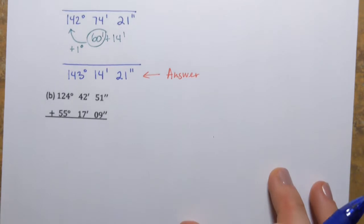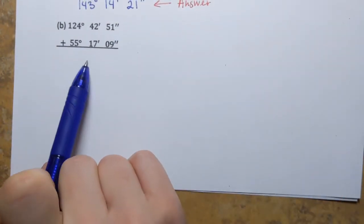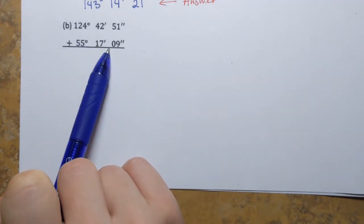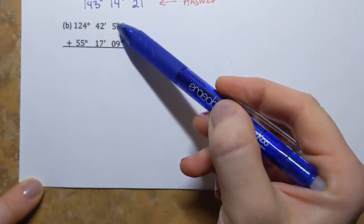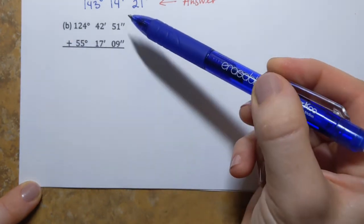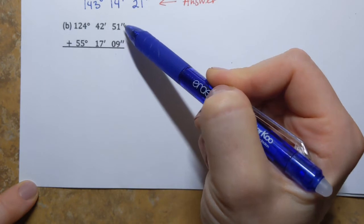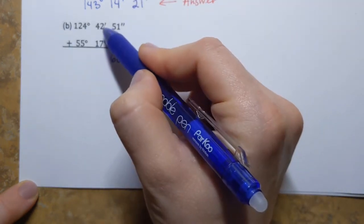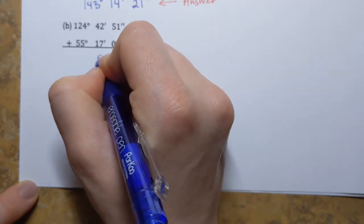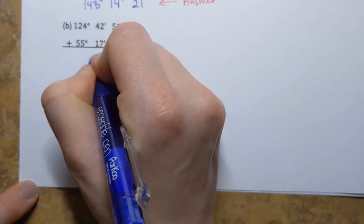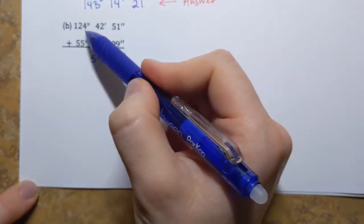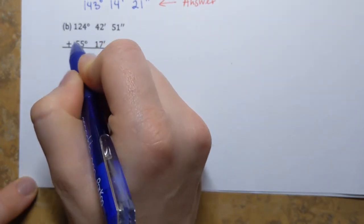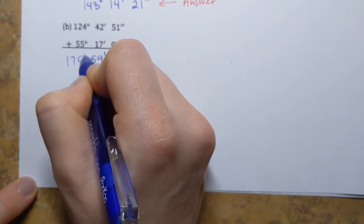Let's try again with another example — same kind of problem, adding two angle measures in DMS format. Starting on the right: 51 seconds plus 9 seconds equals 60 seconds. Then 42 plus 17 gives 59 minutes. And for degrees: 4 plus 5 is 9, 2 plus 5 is 7, and then 1 — that's 179 degrees.